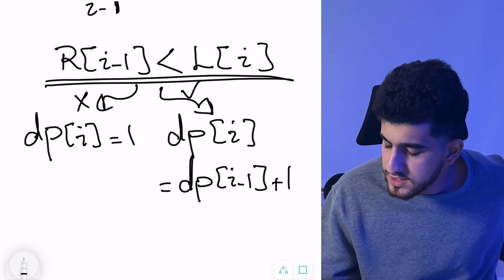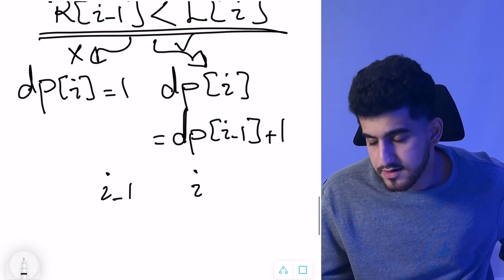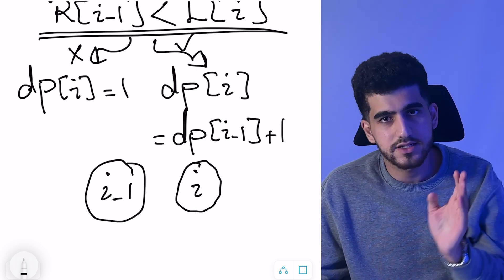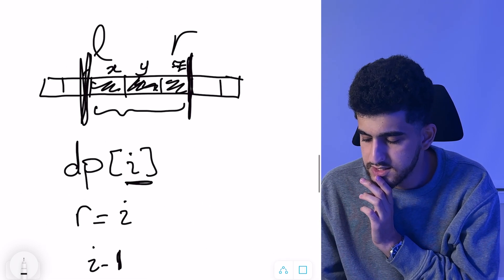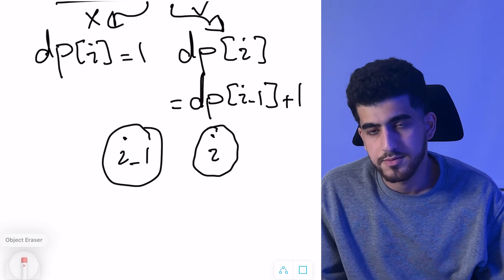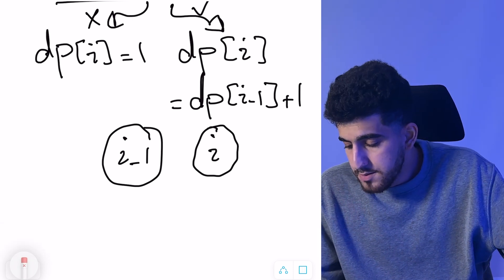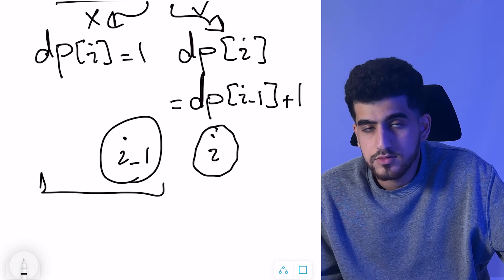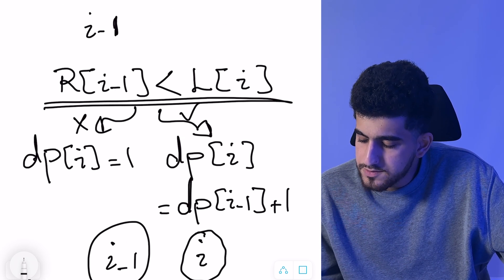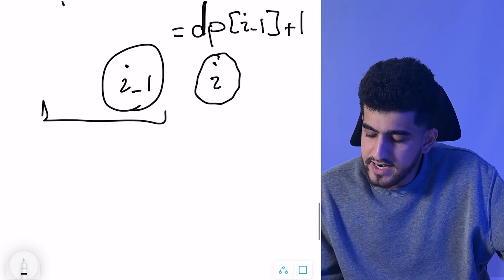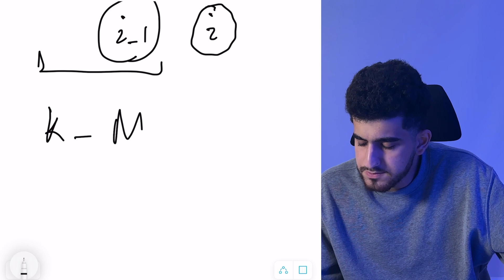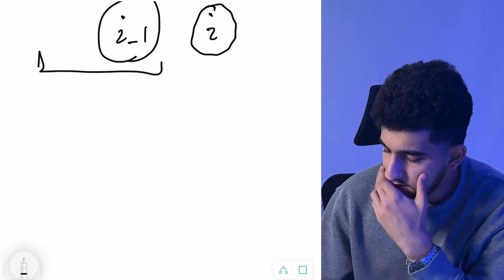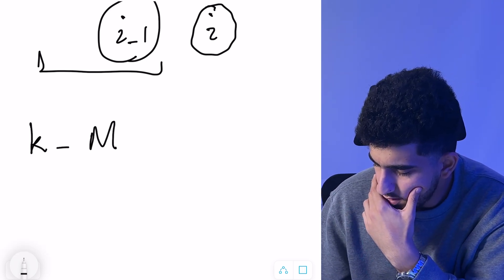The reason is: if dp[i−1] gives us a valid consecutive interval ending at i−1, and i is compatible with i−1, we can simply append i to that interval. These are indices into the sorted unique values vector — not the values themselves. If we have k distinct numbers total, the answer is k minus the maximum value of dp, since we keep that many numbers untouched and perform operations on the rest.